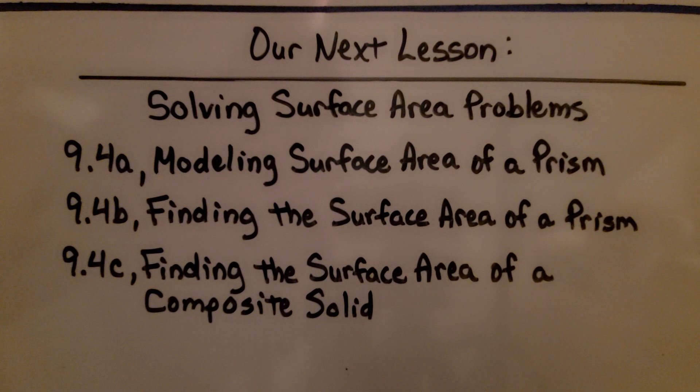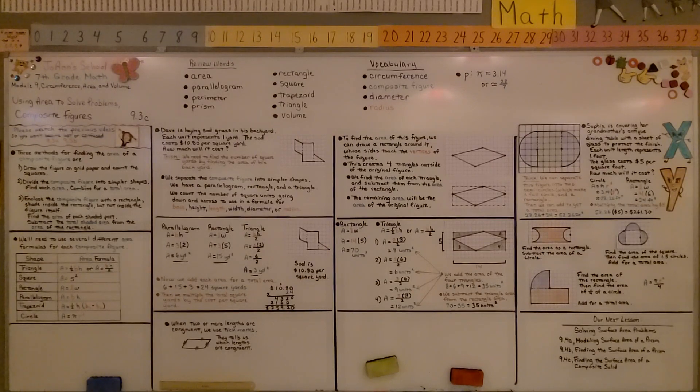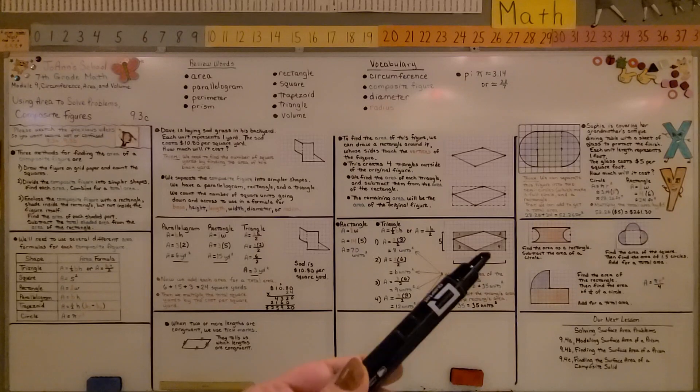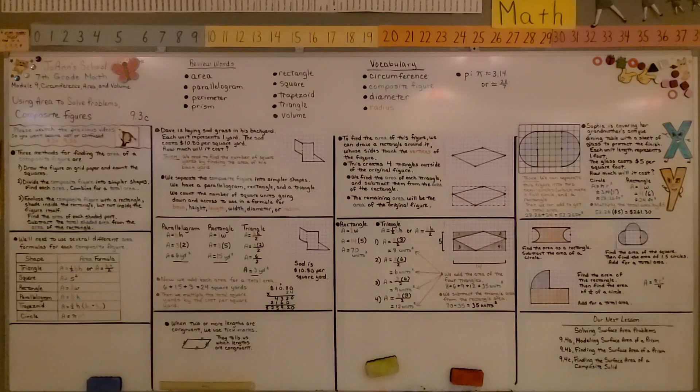We're finished with lesson 9.3, and we're going to be moving on to 9.4, solving surface area problems. We're going to be modeling surface area of a prism. Remember to separate your composite figures into the least amount of simple figures so that you don't have to do as much math. And remember that you can enclose a figure within a rectangle to help find the area. Have a great day, and join me for the next lesson. Bye.